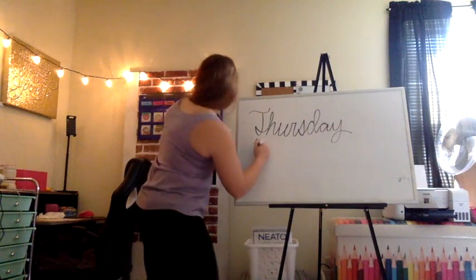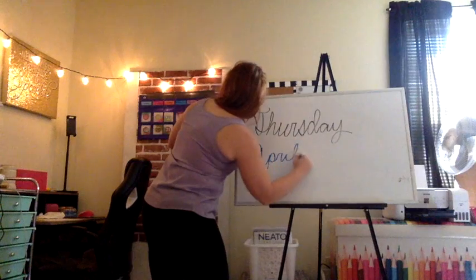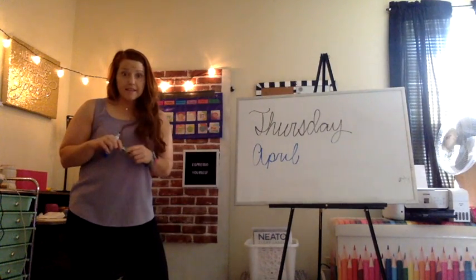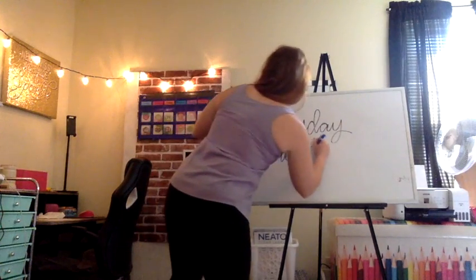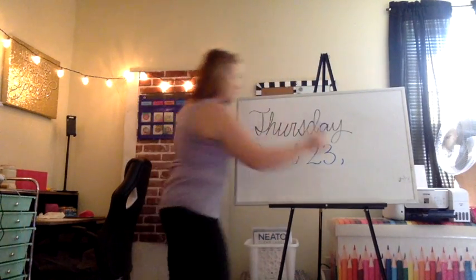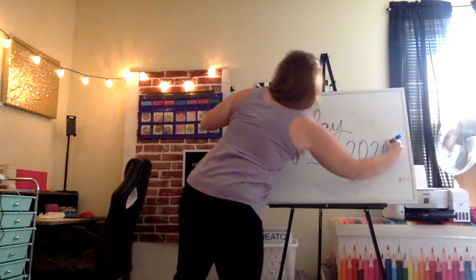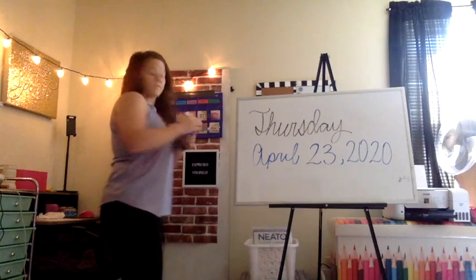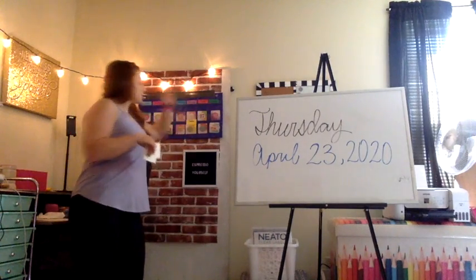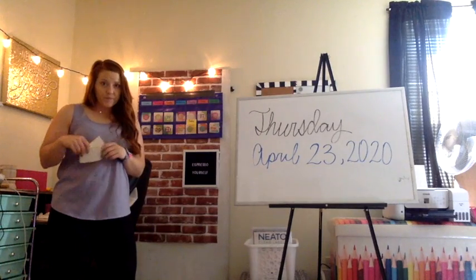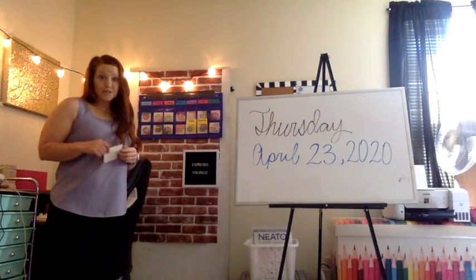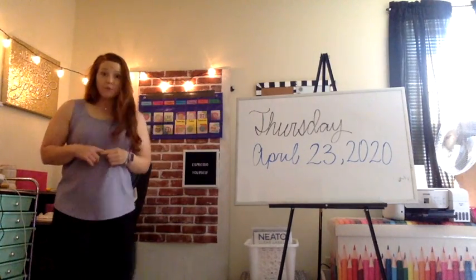April. April what? Yesterday was the 22nd, so today is the 23rd, and the year? 2020. So today is Thursday, April 23rd. What is tomorrow? Tomorrow's Friday, April 24th. And what was yesterday? Wednesday, April 22nd.